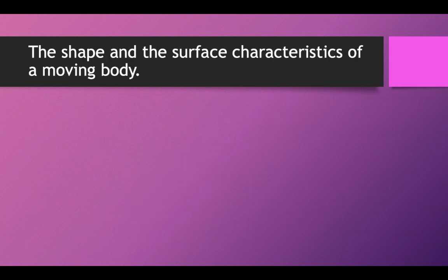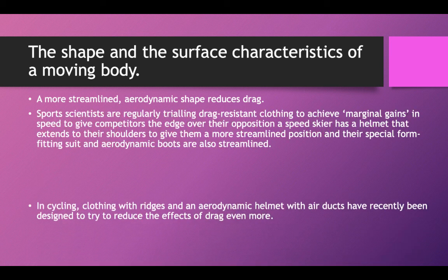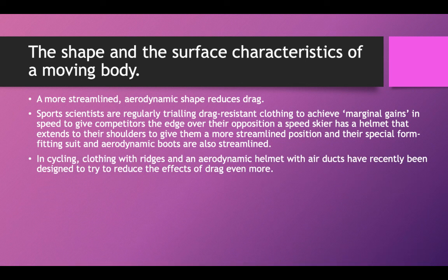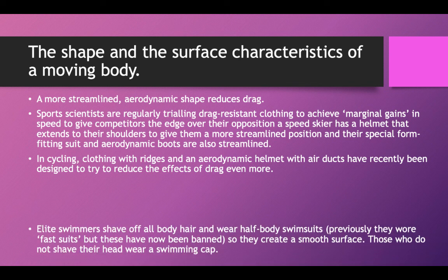The shape and surface characteristics of a moving body: a more streamlined, aerodynamic shape reduces drag. Sport scientists are regularly trying drag-resistant clothing to achieve marginal gains in speed to give competitors the edge. A speed skater has a helmet that extends from their shoulders to give them a more streamlined position, and their special form-fitting suits and aerodynamic boots are also streamlined. In cycling, clothing with ridges and an aerodynamic helmet with air ducts have been recently designed to try and reduce the effects of drag even more.